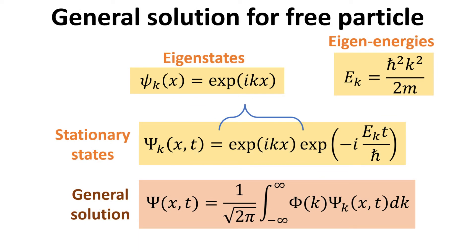Although the stationary states psi_k are solutions to the time-dependent Schrödinger equation, the general solution usually requires a combination of these stationary states in order to satisfy the initial conditions. Since the quantum number k which characterizes the stationary states is a continuous number, we write the general solution psi as an integral sum of the stationary states, weighted by the coefficient phi. Here, we pull out a factor of 1 over square root of 2π so as to symmetrize the Fourier transform pair.